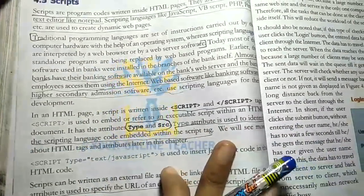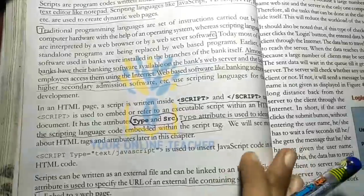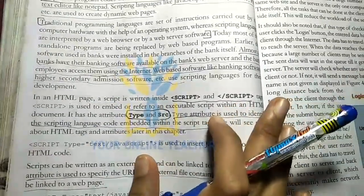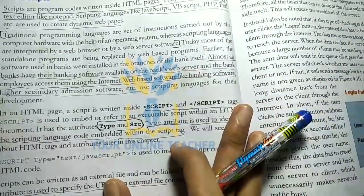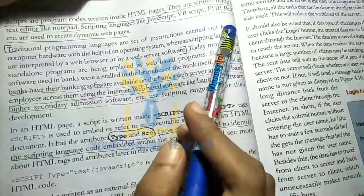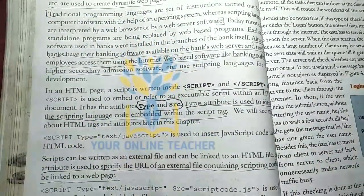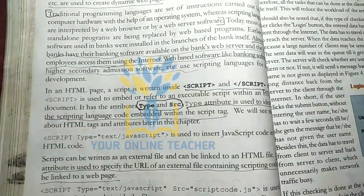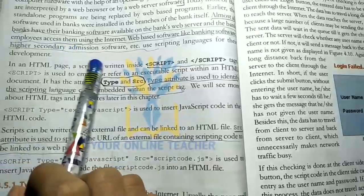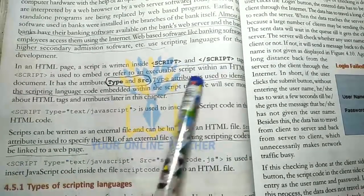Next is scripting. We can embed program code in an HTML page using a scripting language. We can use a text editor like Notepad to write the script. Scripting languages include JavaScript, VBScript, PHP, Perl, etc. We can use these scripting languages to create dynamic web pages — for example, banking software and higher secondary admission software are developed using scripting languages.